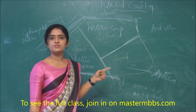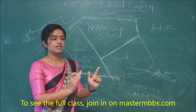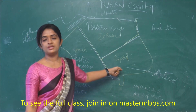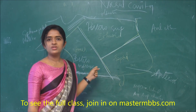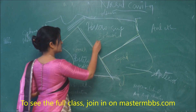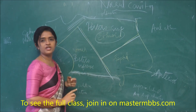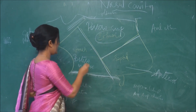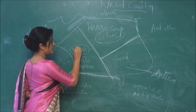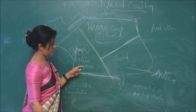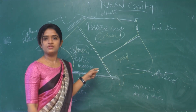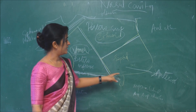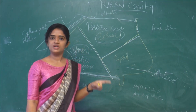The entire nasal septum is not made up of bone. The posterosuperior and posteroinferior parts have a bony origin, whereas the anterior part is made up of cartilage. The bones forming the nasal septum are: the perpendicular plate of the ethmoid bone, which forms the posterosuperior quadrant, and the vomer, which contributes to the posteroinferior part. So these two quadrants are formed by the bones — ethmoid and vomer.